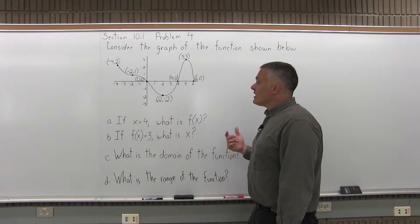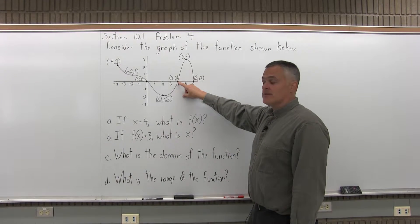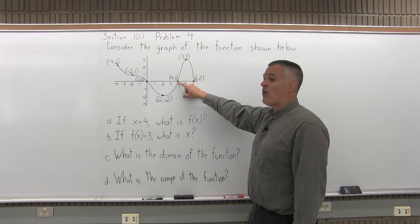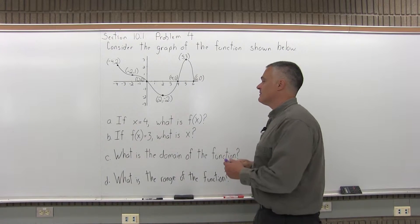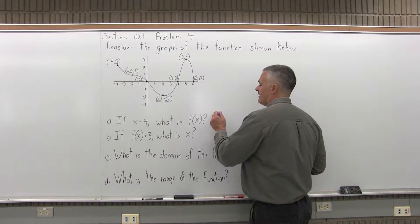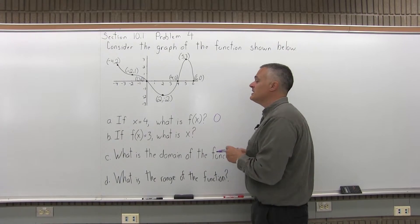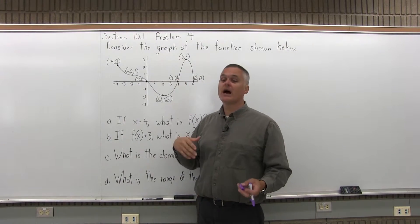So, if you look at the graph, there is a point 4, 0. It has an x-coordinate of 4 and a y-coordinate or f of x-coordinate of 0. So the answer to part a is 0. And what this means is, if you put in a 4, what you get out is a 0.